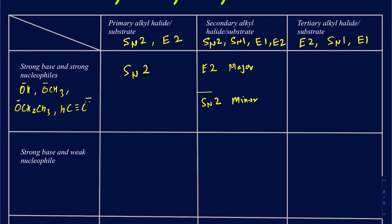For the most part, your E2 is going to be the major product. Sometimes if you want to eliminate the SN2 altogether, you may want to heat up the reaction, and that way it's only going to be doing the E2. Now, since you're using these small bases, in terms of reduced selectivity, it's going to be making a Zaitsev product for the most part. Remember, it's not always Zaitsev, because you may see some restrictions — for example, if you don't have an anti-periplanar position. As far as your tertiary alkyl halides go, it's only going to be doing E2 mechanism — there's no SN2 for tertiaries. It's only E2, making the Zaitsev product, which is the most substituted product.